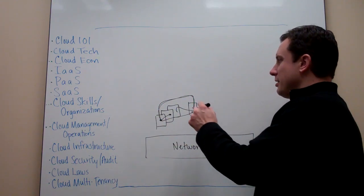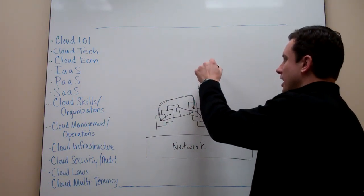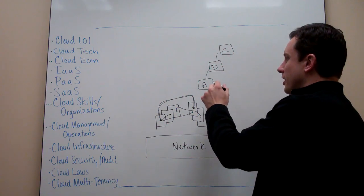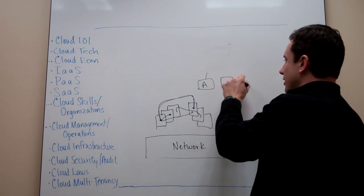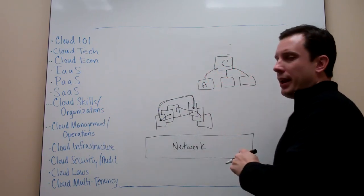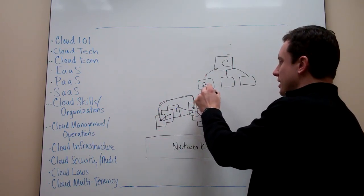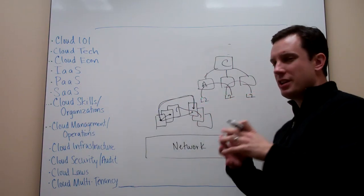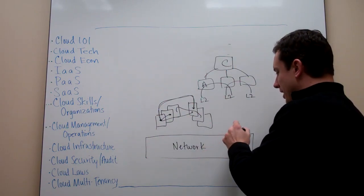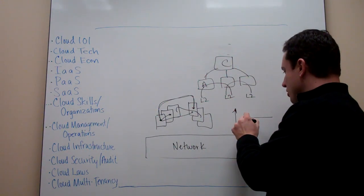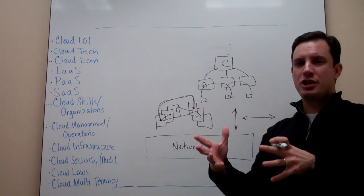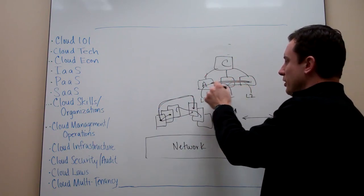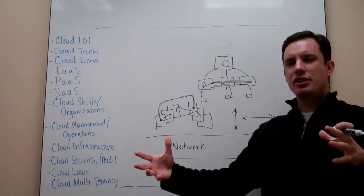The network used to be very hierarchical — with an access layer, a distribution layer, and a core layer, with various layer 2 and layer 3 boundaries. Some of those things are starting to change. We're seeing the network flatten out to just access layer and core, where everything is only one hop away. We're seeing a flattening of the network because people want to extend layer 2 domains from one part of the network to another. We're also seeing more traffic flowing east to west rather than north and south from client to server, because of more machine-to-machine traffic and applications talking to each other, creating greater need for bandwidth and flexibility within the network.